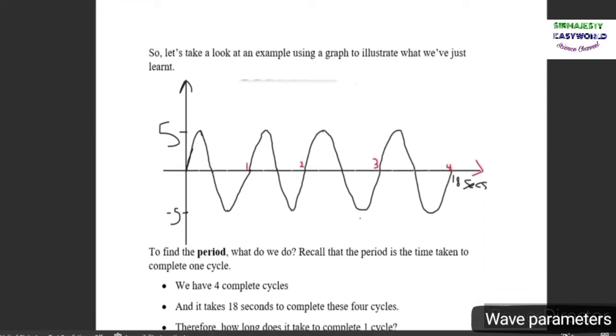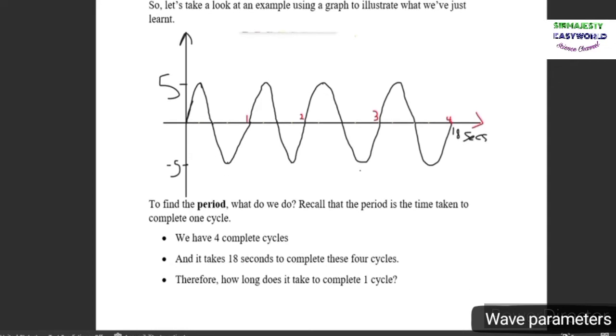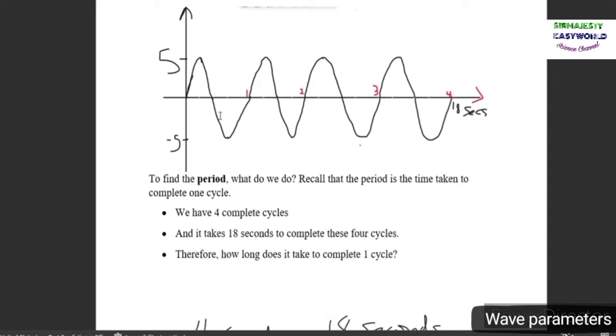Let's take a look at an example using a graph to illustrate what we've just learned. This is a graph not exactly drawn to scale. We're asked to find the period and the frequency. First, recall that the period is the time taken to complete one cycle. If we trace it out, you can see we have four complete cycles.